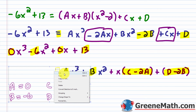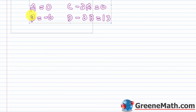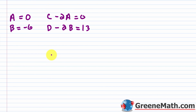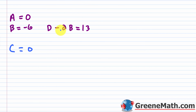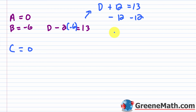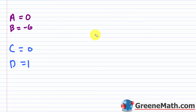Solving the system: we already know a is zero and b is negative 6. Plugging a equals 0 into c minus 2a equals 0, we get c equals 0. Then for d minus 2b equals 13, substituting b equals negative 6: d minus 2 times negative 6 gives d plus 12 equals 13, so d equals 1.